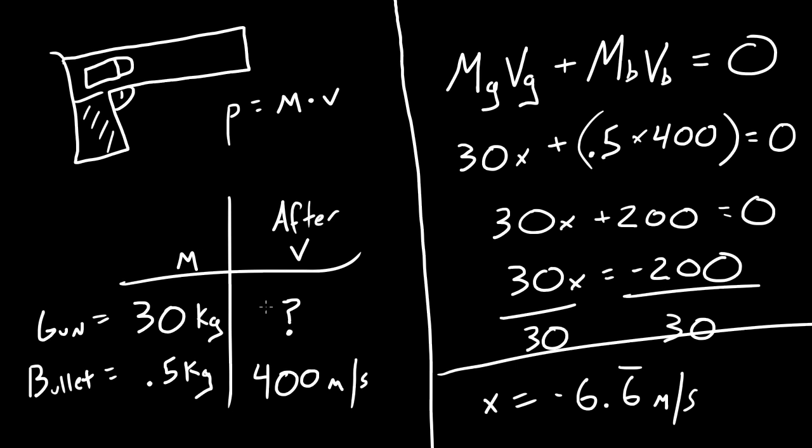Tell whoever was asking us for this information, the police officer or the guy calculating, or maybe we just were curious, that whenever you fire a gun with a mass of 30 kilograms, and the bullet is half a kilogram, and it's firing at a rate of 400 meters per second, then the kickback speed of the gun is negative 6.6 meters per second.